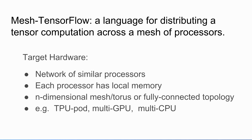What hardware are we thinking of? Anything where you have a network of similar processors, each one with a local memory. What we have at Google is these meshes of TPUs, but it's equally useful for multi-GPU machines.